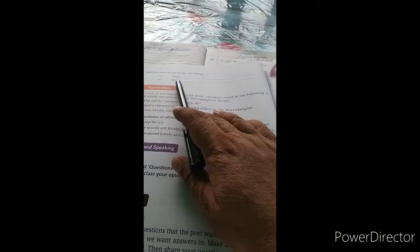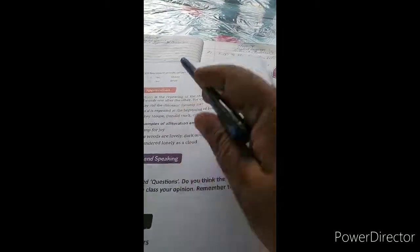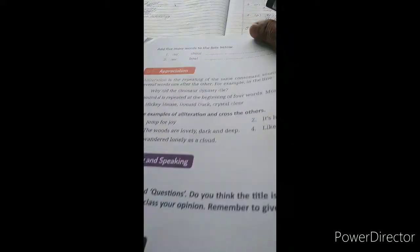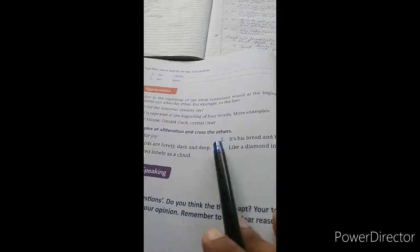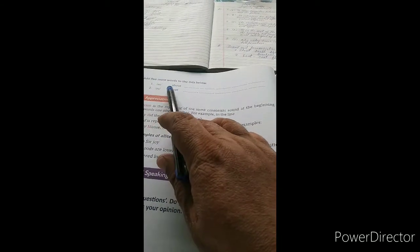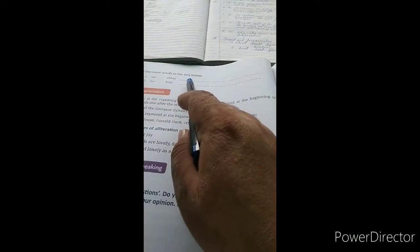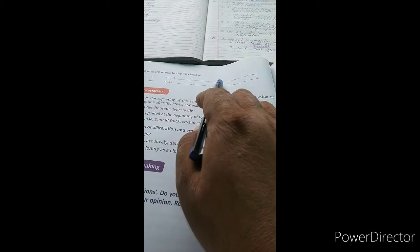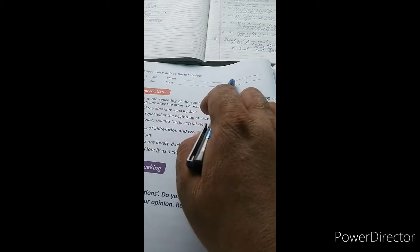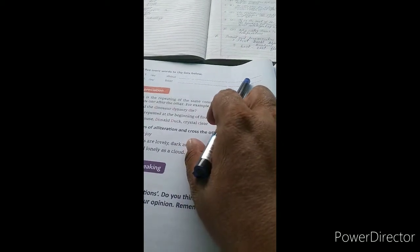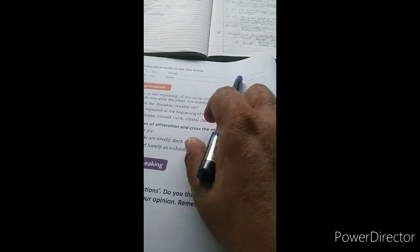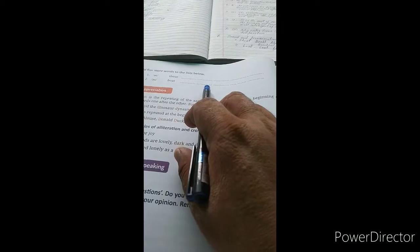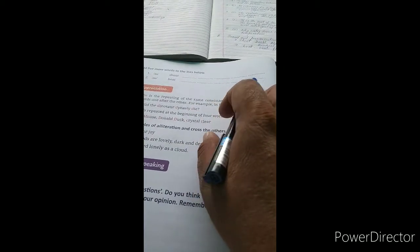Now you have to add five more words to the list below. For 'shout' we can write: doubt, about, drought, blackout, and breakout. For 'vote' we can write: quote, float, goat, throat, and boat.